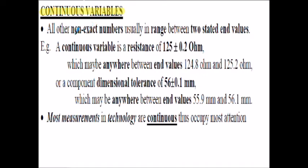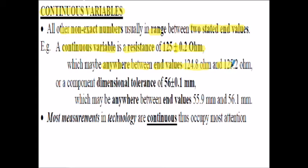Continuous variables - all other non-exact numbers, usually in a range between two stated end values, are continuous variables. For example, a continuous variable is a resistance of 125 plus or minus 0.2 ohms. This means the value of resistance can be anywhere between the end values of 124.8 ohms, the minimum value, and 125.2 ohms, the maximum value.